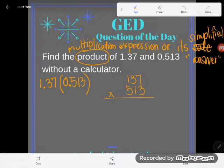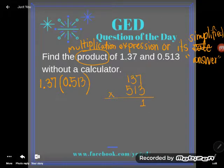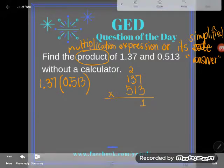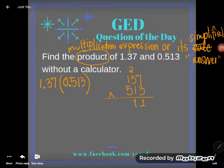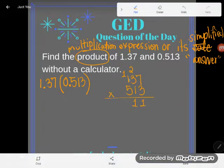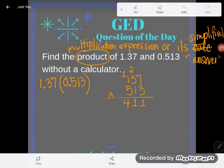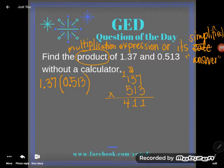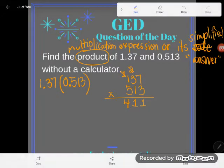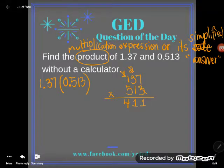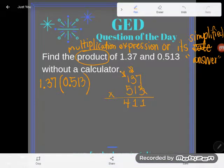So right now I'm just going to go ahead and multiply. 3 times 7 is 21, so there's my 1, carry my 2. 3 times 3 is 9, 10, 11. So I'll drop my 1, carry my 1. 3 times 1 is 3 plus 1 is 4. And I'm going to go really slowly here and be really neat because I actually screwed this up in a video before.